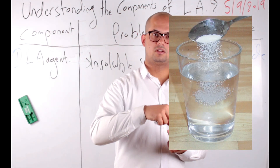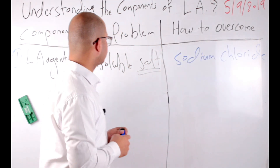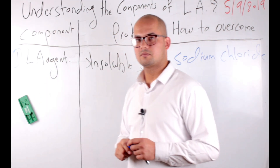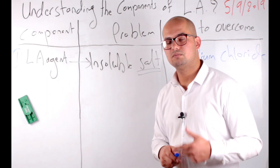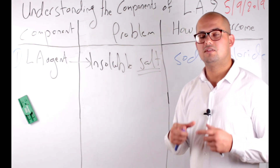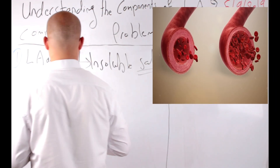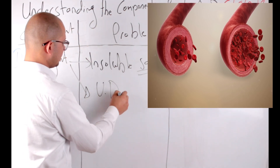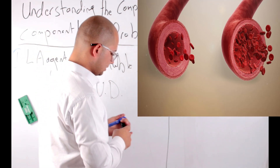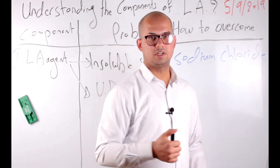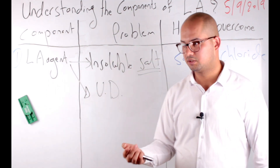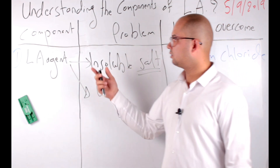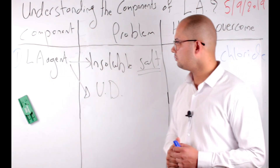Now we have two components: the local anesthetic agent salt dissolved in sodium chloride. But we have another problem — local anesthetic agents block the action potential of smooth muscles, causing vasodilation. As a consequence of vasodilation, it will increase the rate of absorption, decrease the duration, increase the toxicity, and decrease the potency of the local anesthetic agents.